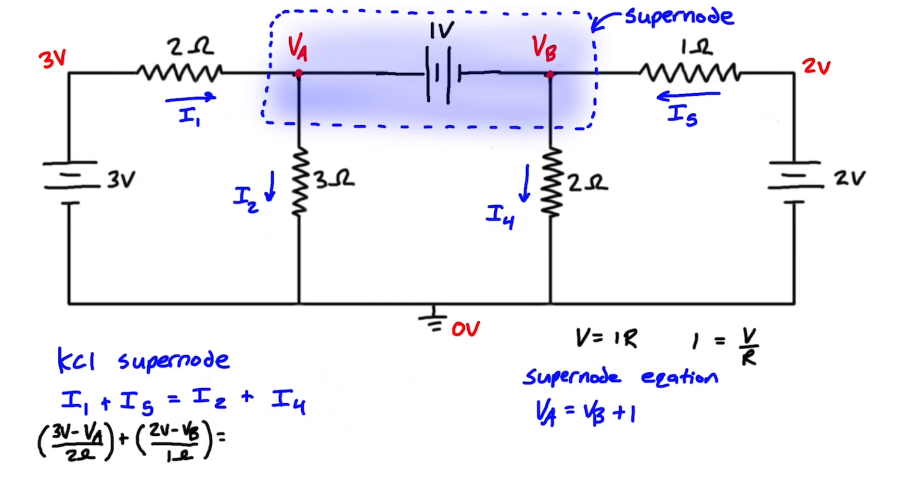For i2 we're just going to have VA minus zero so that's just going to be equal to VA over the resistance which is three ohms and then for i4 it's exactly the same we have VB minus zero which is VB over the resistance which is two ohms. What you should do now is just multiply each term by the lowest common denominator which is going to be six so we can just write a six in front of each term here.